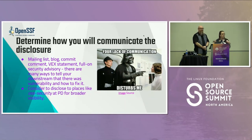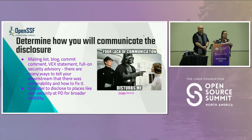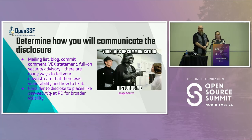Determining how you as the project maintainer or security researcher are going to communicate this disclosure to the community is also incredibly important. There are a number of different ways — publish on an email list, make an issue, PR, security advisory, blogs, commits. There are so many different ways to share this information with downstream users. The most important thing is to figure out beforehand what your users are expecting and share it in a place they're actually looking. Determining all of this as early as you can before an incident will help ensure that when there is an incident, it goes as smoothly as possible. This is something you would put in your security policy from the very first step.